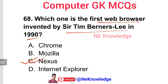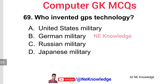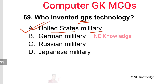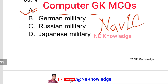Question number 69: Who invented GPS technology? GPS full form is Global Positioning System. The correct answer is the United States military — option number A. The US military invented GPS technology. India also has its own GPS system (NavIC).